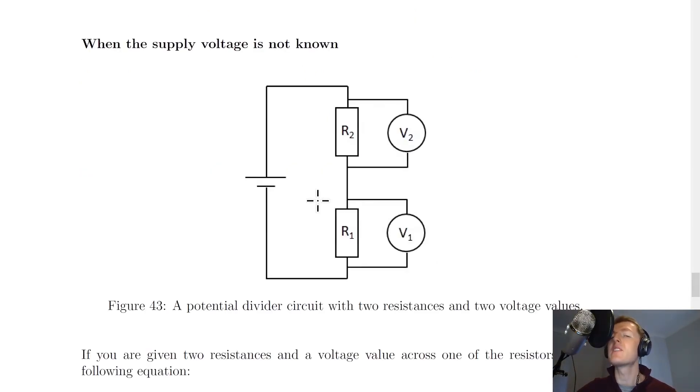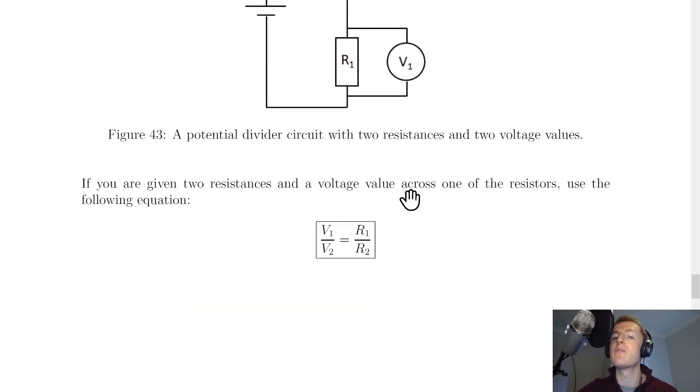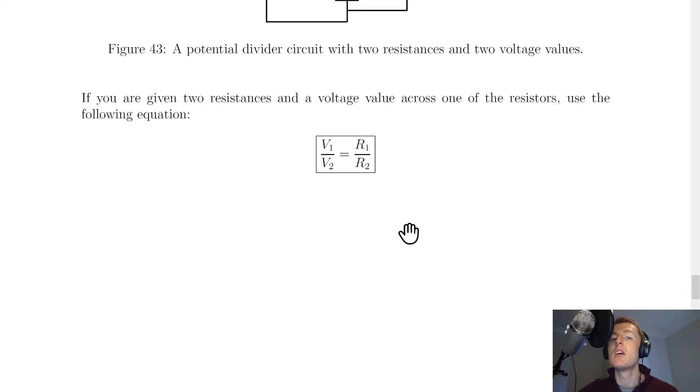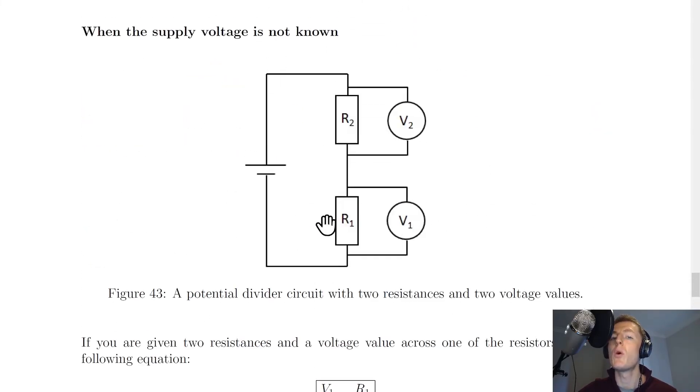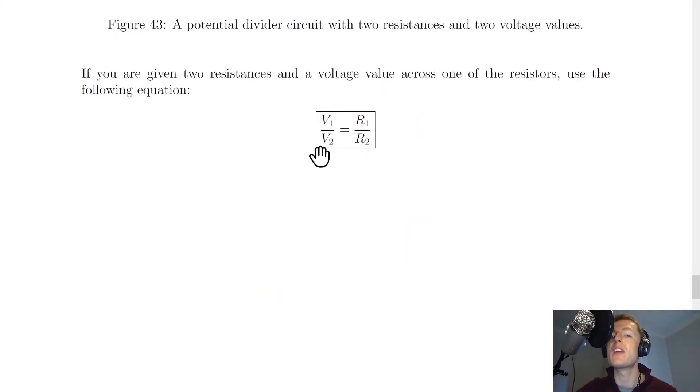However, the second method looks at when the supply voltage is not known. So this time we don't know what VS is. However, you might be given some other values such as resistances and voltages. If you're given two resistances and a voltage value across one of the resistors, for example, then you can use the following equation. So V1 over V2 is equal to R1 over R2. So this is just showing you what we have here. So there's V1, there's V2, R1 and R2. So what this means is we've got a ratio of voltages is equal to the ratio of resistances. So in a question, you're likely to be given three of these values and you have to work out the fourth unknown value. And that's our second equation for potential dividers.